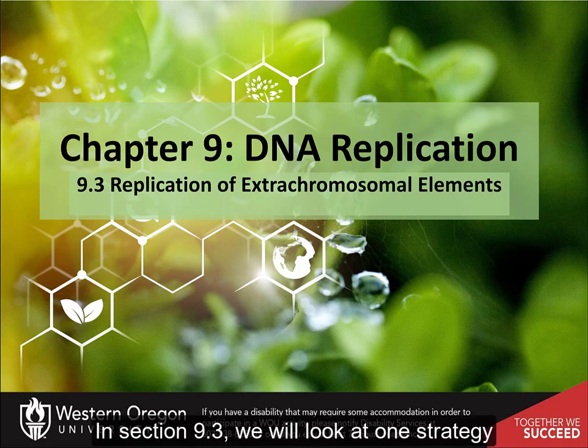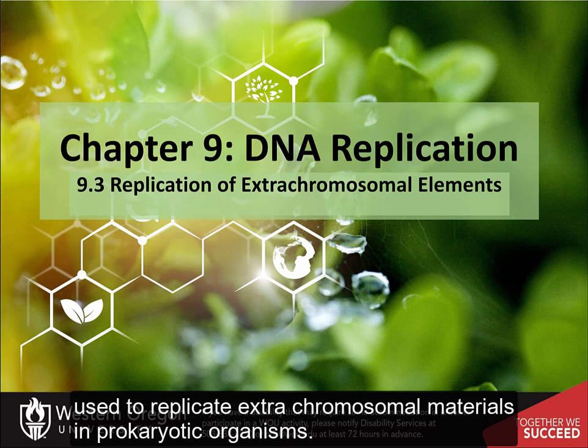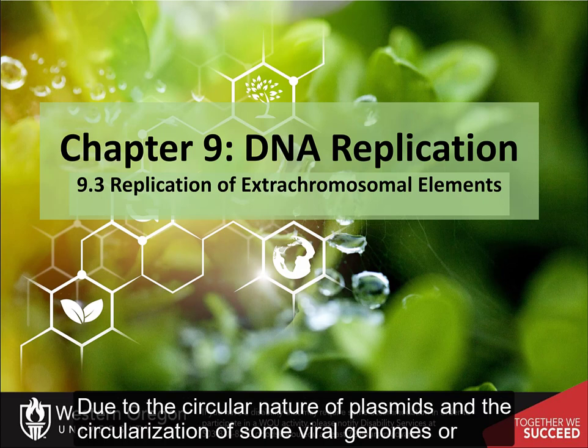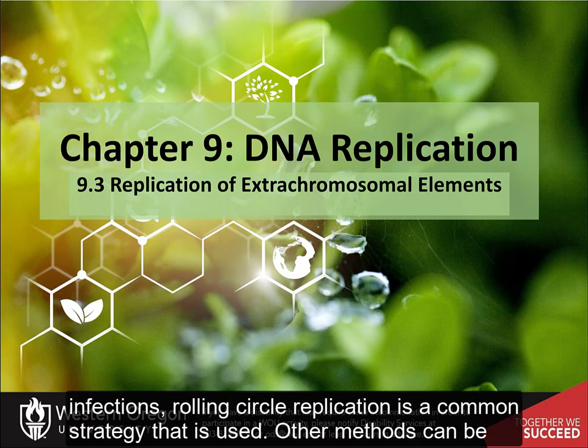In section 9.3, we will look at one strategy used to replicate extra-chromosomal materials in prokaryotic organisms. Due to the circular nature of plasmids and the circularization of some viral genomes or infections, rolling circle replication is a common strategy that is used.